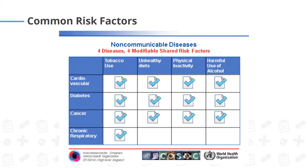This is again from the World Health Organization for non-communicable diseases and their risk factors. As you can see in the chart, cardiovascular disease, diabetes, and cancer share four modifiable risk factors: tobacco use, unhealthy diets, physical inactivity, and harmful use of alcohol, while chronic respiratory disease only has tobacco use as a risk factor.